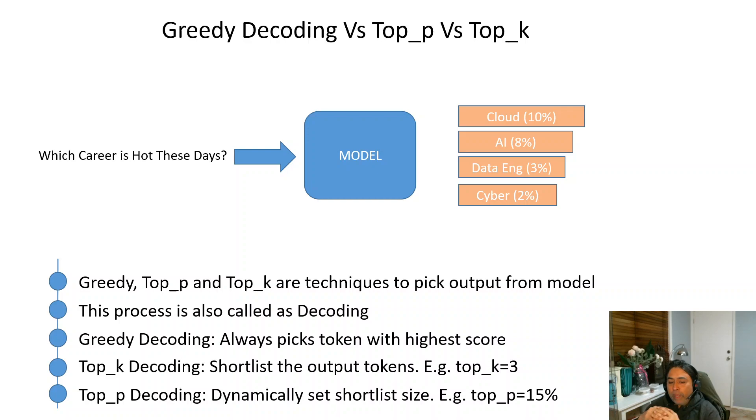In our example, if it returns cloud and AI combined, it will be 18%. The model is not going to select this. It will select cloud and data engineering because 10 plus 5 equals 15%. And then out of these two tokens, the model is going to return randomly one of them. So normally we set this top_p to a higher value to also search from the tail end of the output results.